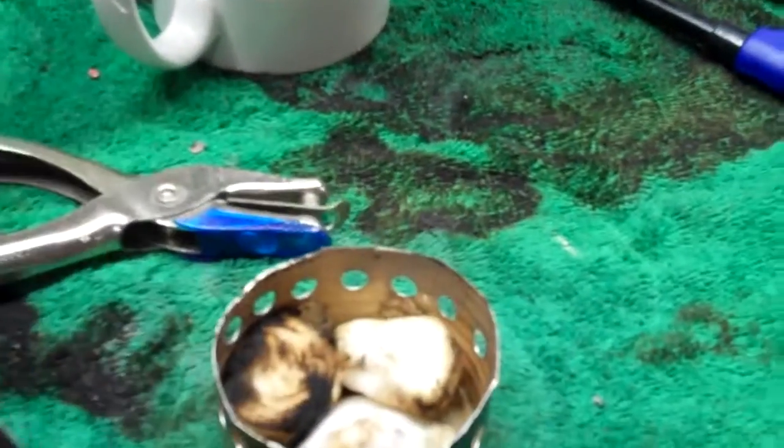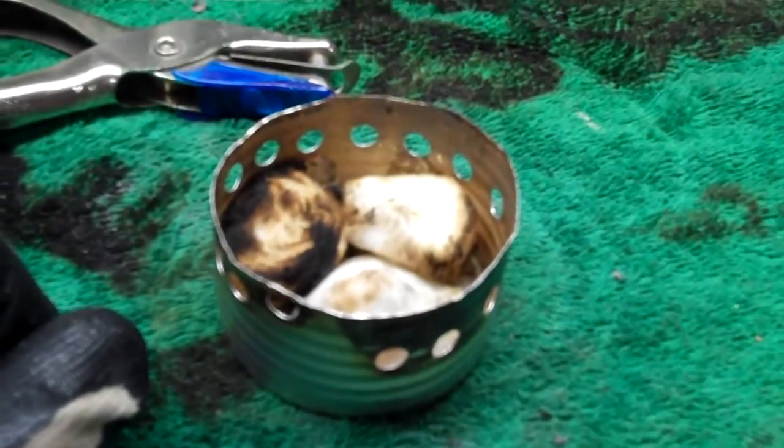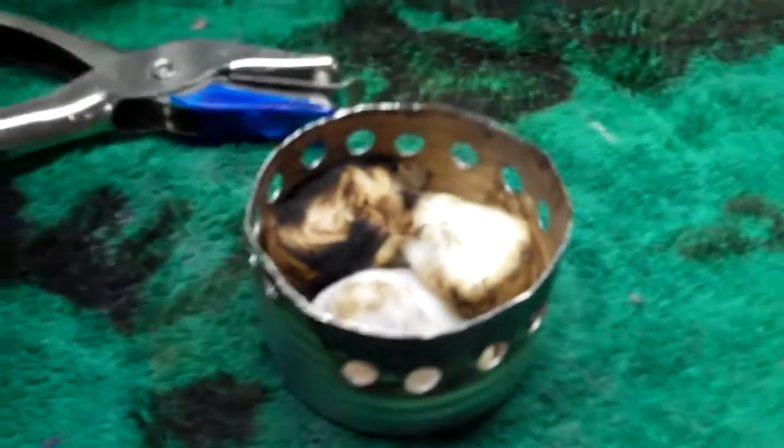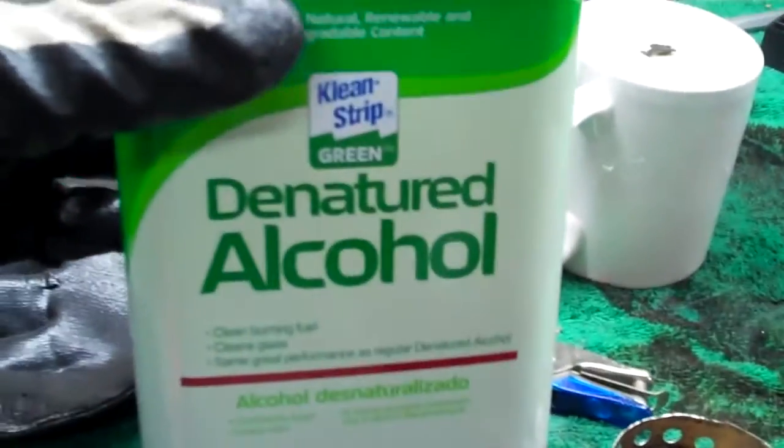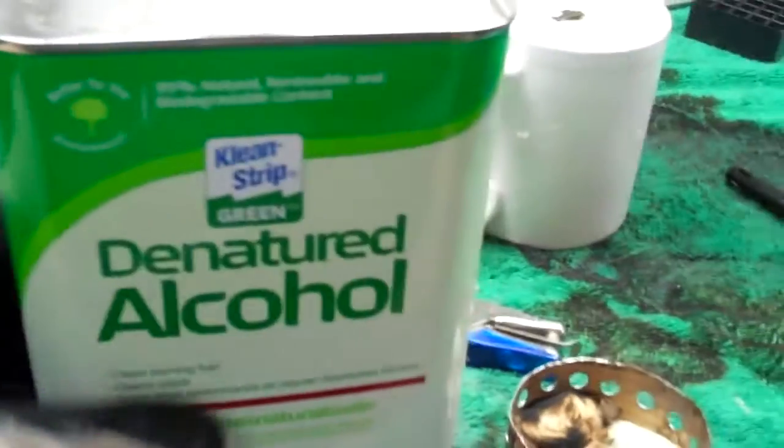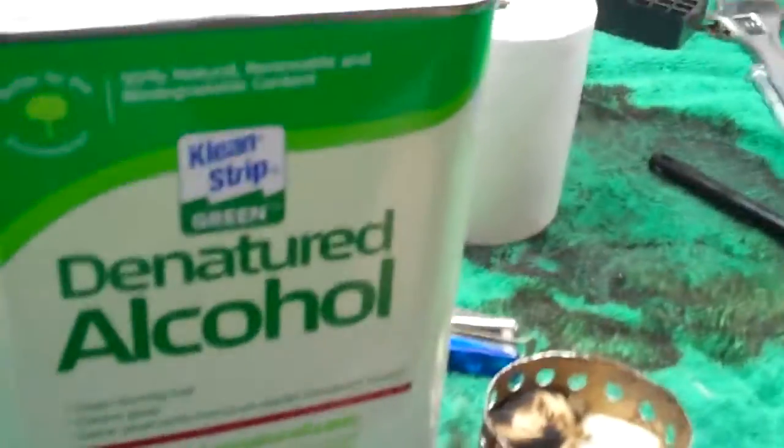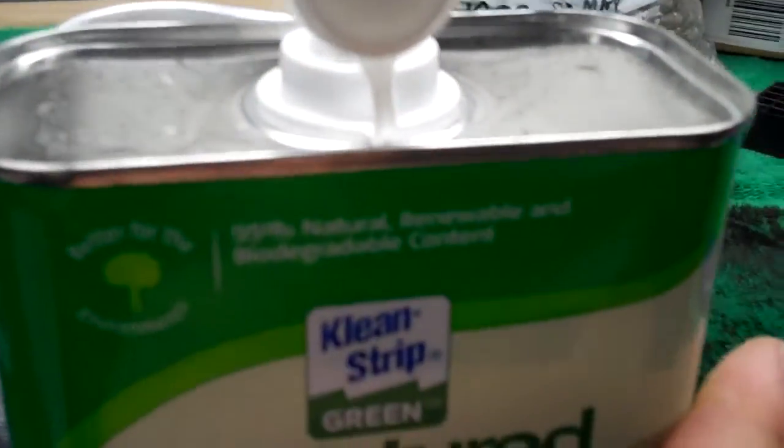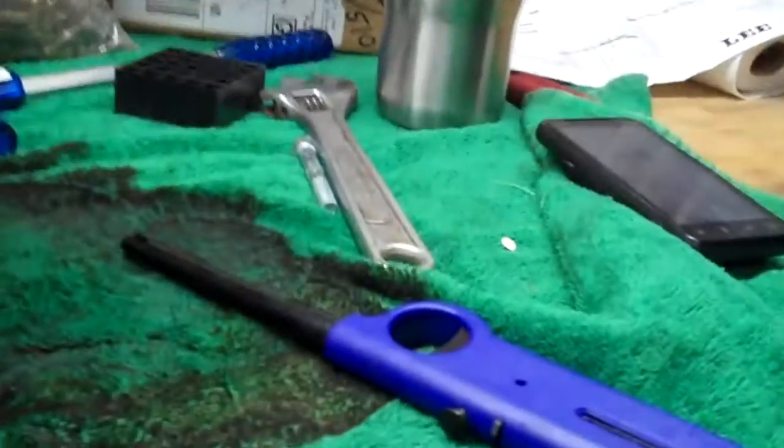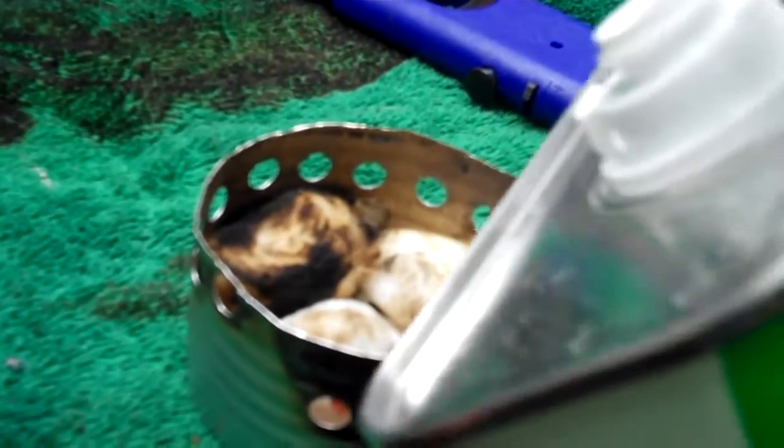And all I did was I put three cotton balls in there. The fuel that I'm using is this that I got from Home Depot, Clean Strip denatured alcohol. It's in a green can, I don't know why, it's some kind of green marketing scam I think. It says natural biodegradable content.